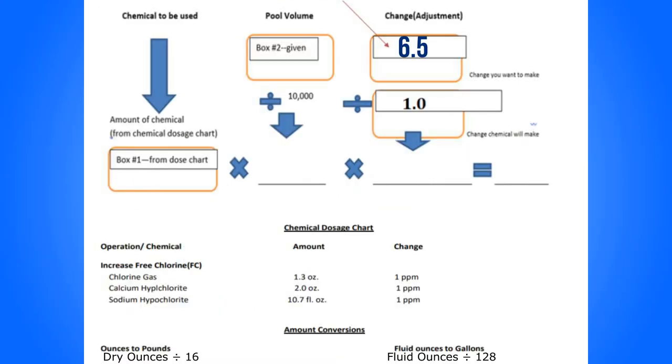Now we do this problem in the worksheet just like we do with a chemical adjustment where we don't have a product label. I provided the chemical dosage chart down below. So box number one will come from here. What chemical are we using in the problem? You've got to go back and look. We're using calcium hypochlorite, so you've got to find calcium hypochlorite here.